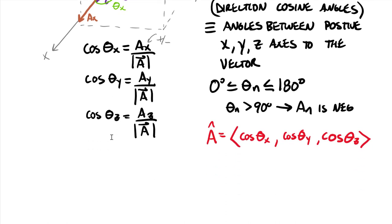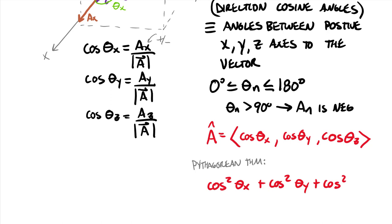Because these are components of a unit vector, we can apply the Pythagorean theorem: cos²(theta_x) + cos²(theta_y) + cos²(theta_z) = 1, since that is the length of the total unit vector. The handy thing about this is it gives you an algebraic equation — if you only know theta_x and theta_y, you can solve for theta_z by back-solving with this scalar equation.